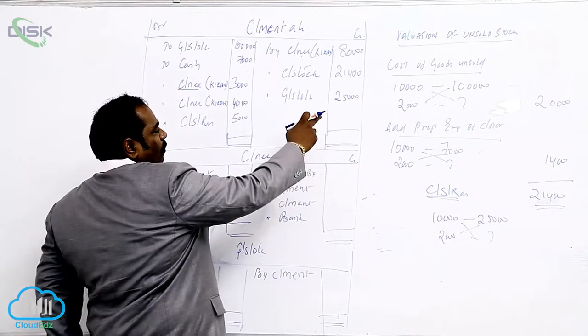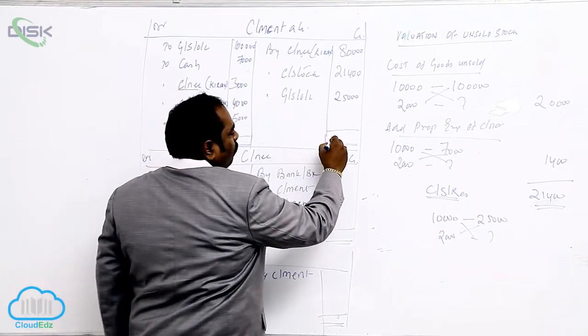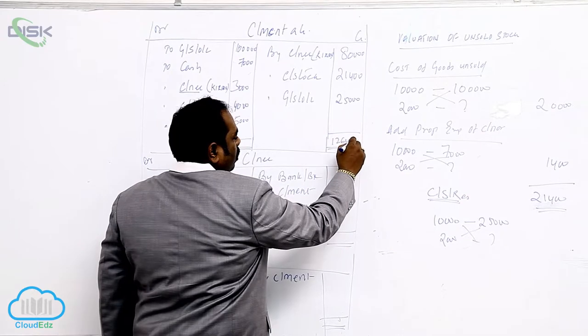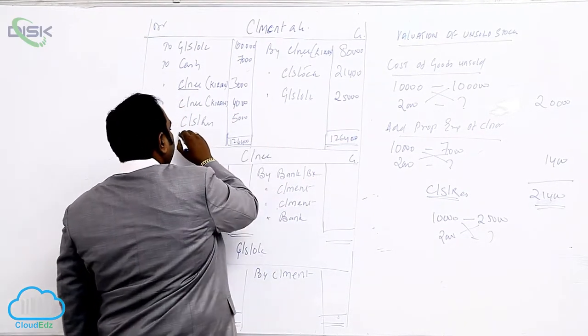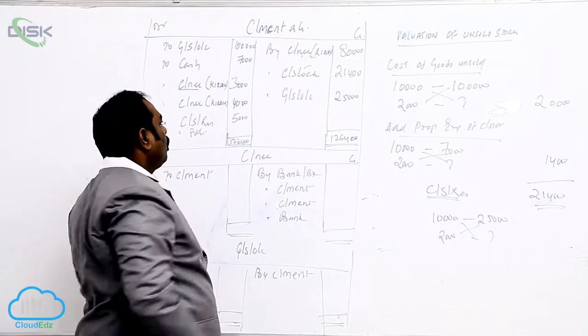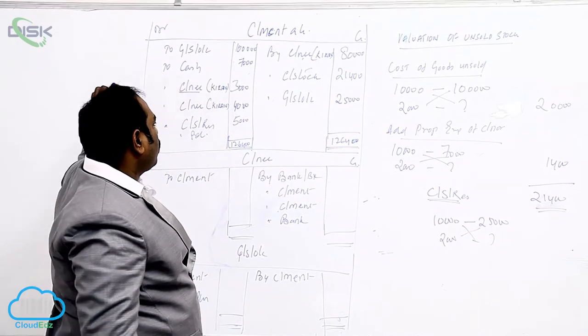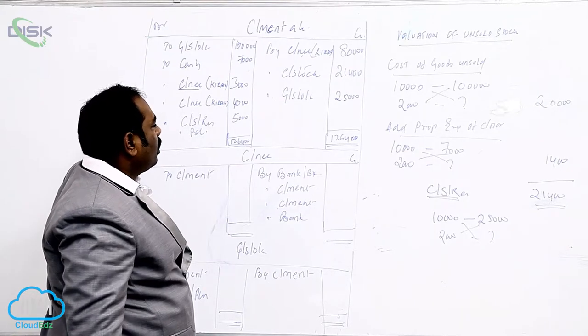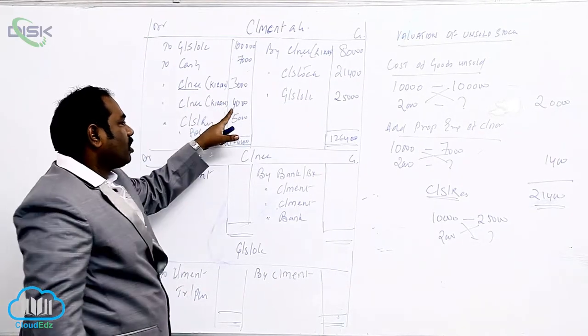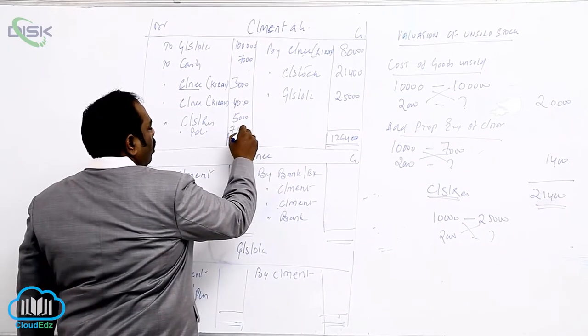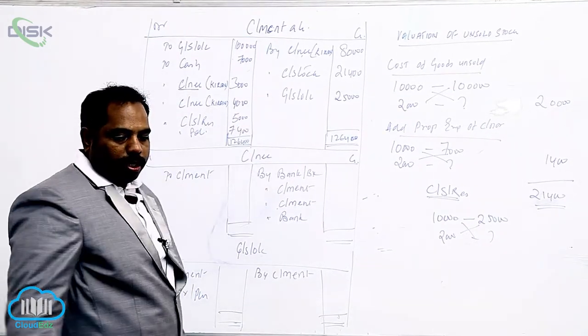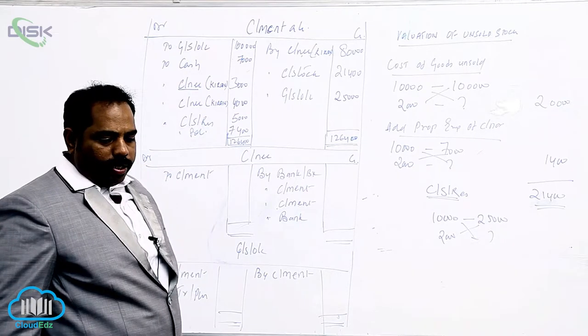So 80 plus 25, 1,05, 1,26,400. 2,000, 1,26,400. 2,000, 1,26,000 minus 1,26,000 minus 7,19, 19 minus 3,16, 16 minus 4, 12, 12 minus 5, 7, 7,400 is what? Profit or loss which we got in the problem.